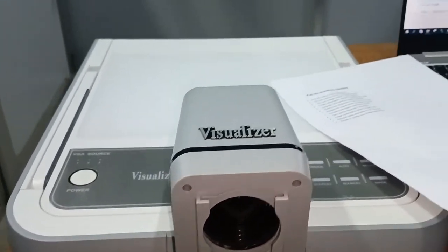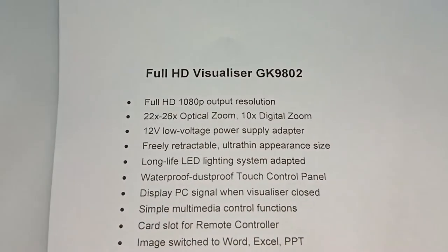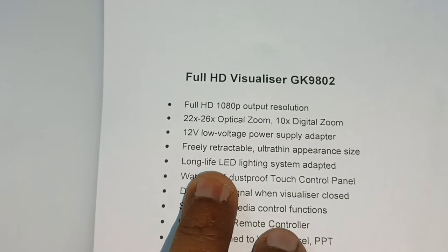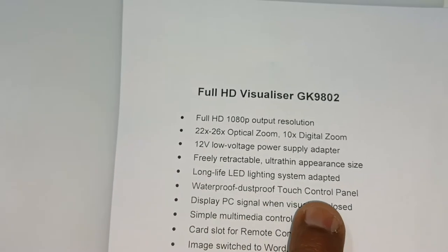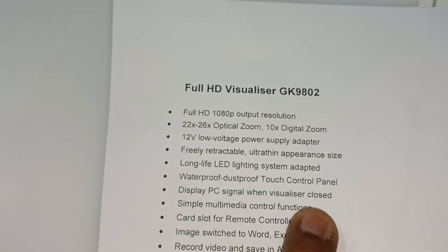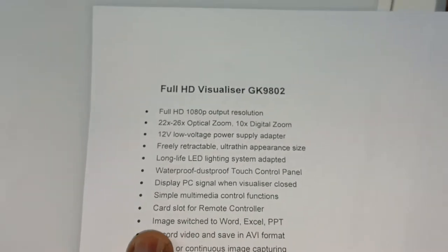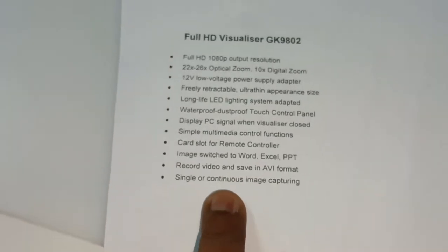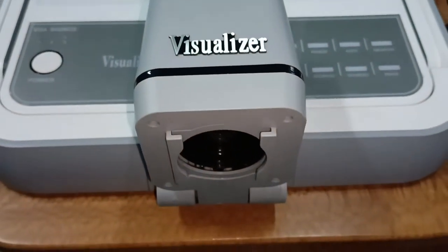The basic features of this document visualizer are: full HD 1080 output resolution, 22x optical zoom, 10x digital zoom, 12-volt low voltage power supply adapter, freely retractable ultra-thin appearance, long-life LED lighting system, waterproof and dustproof touch control panel, PC signal display, simple multimedia control functions, card slot, remote controller support, image switch to Word, Excel, and PPT, record video and save in AVI format, and single or continuous image capturing.